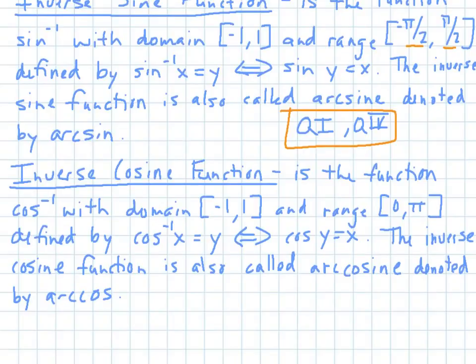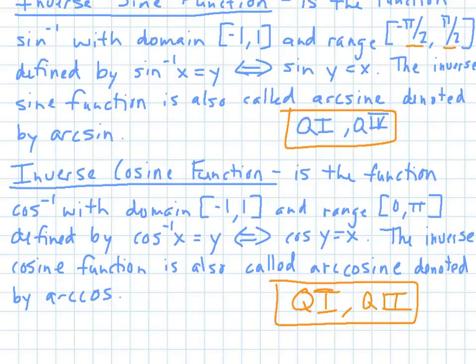Inverse cosine is the same thing. You get the values from negative 1 to 1, including those points, but your range is from 0 to pi, because you are restricted in the first and the second quadrant. And so this is defined as the inverse cosine of x equals y, which is the same thing as saying cosine of y equals x.